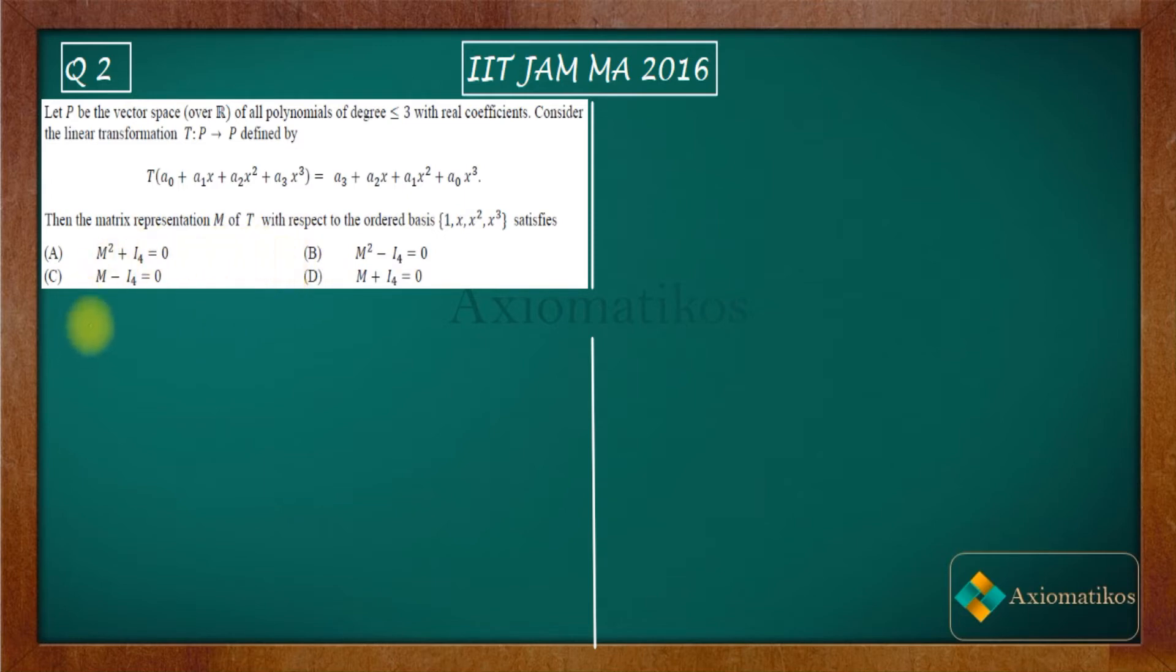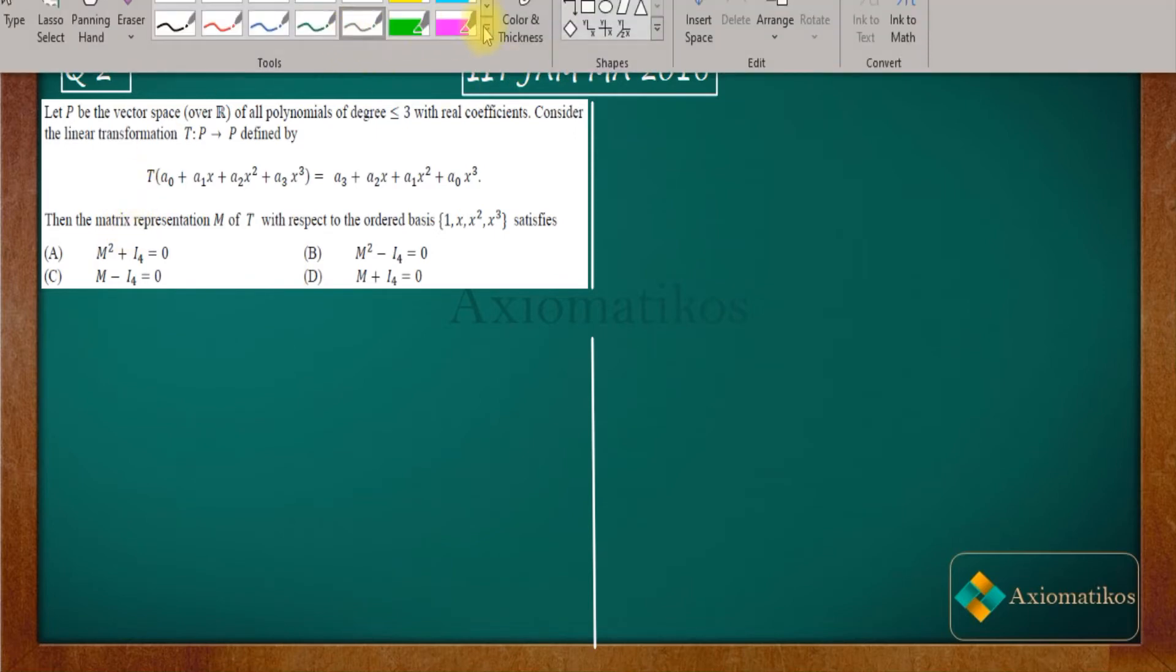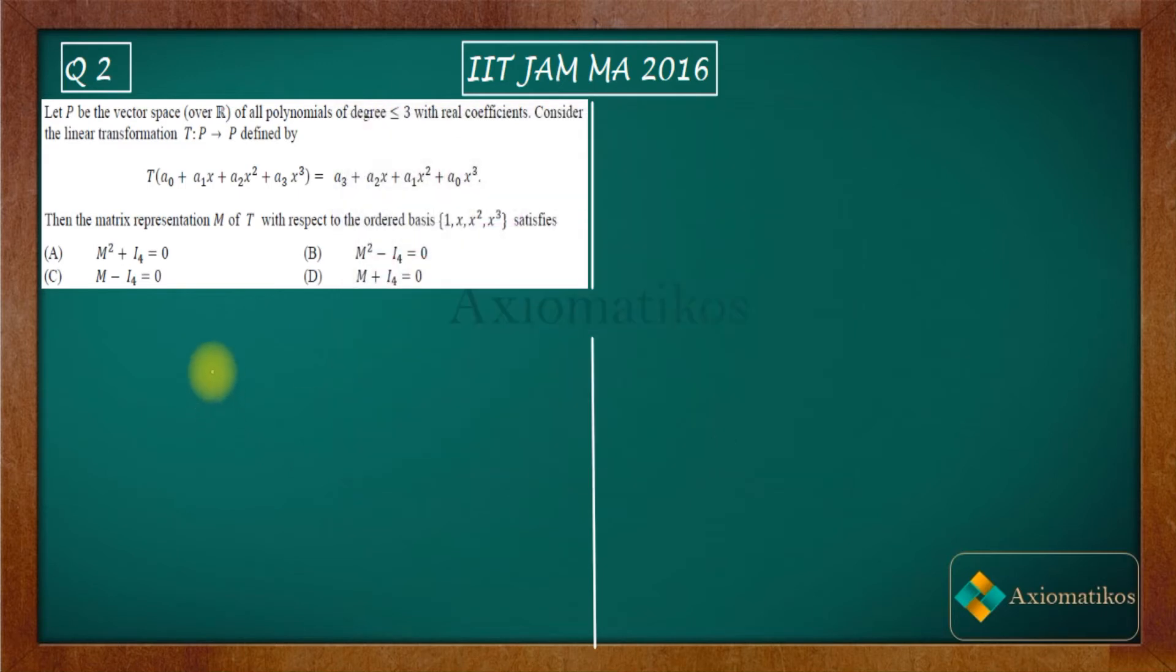I will begin by just writing your P. So see what we have here. We are on a vector space with polynomials up to degree 3. Now T is (a₀ + a₁x + a₂x² + a₃x³) which equals (a₃ + a₂x + a₁x² + a₀x³). So this is your transformation.